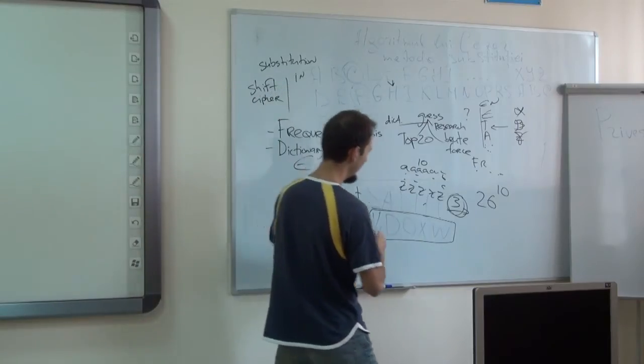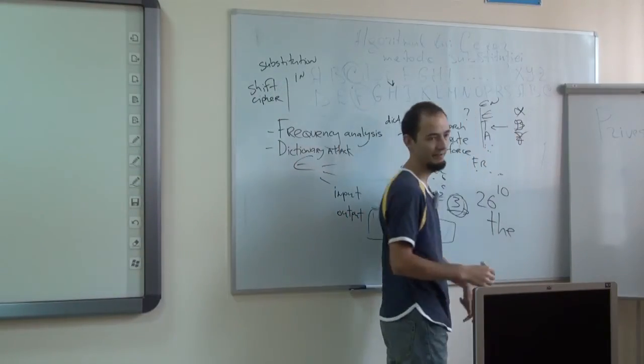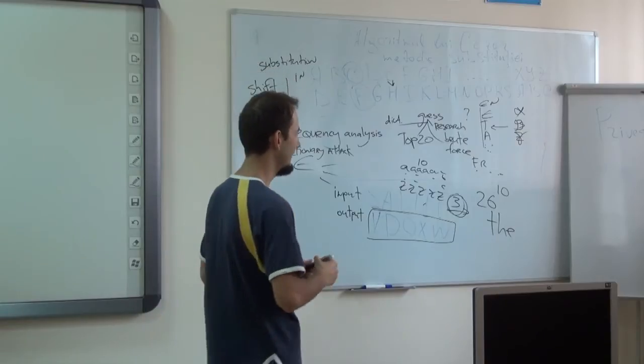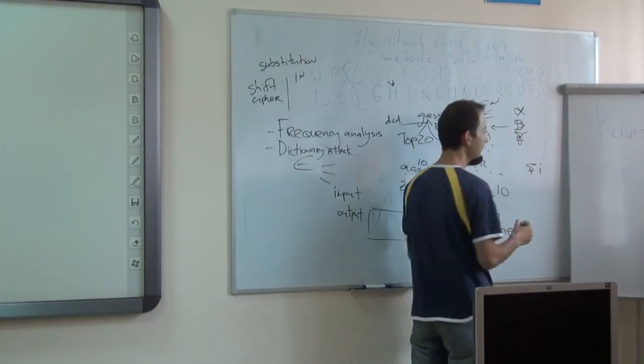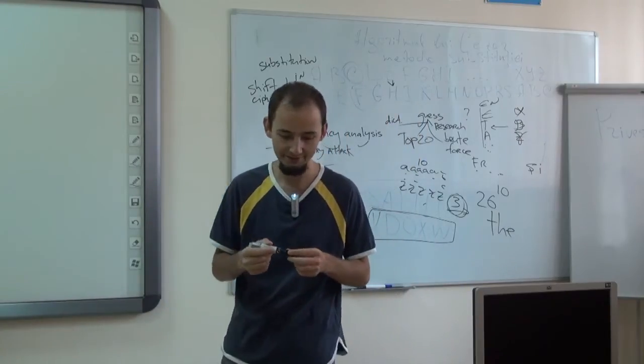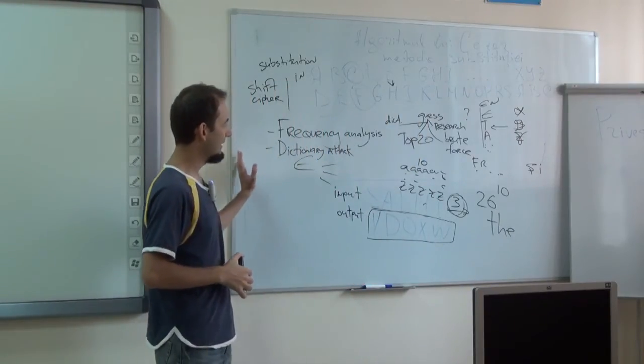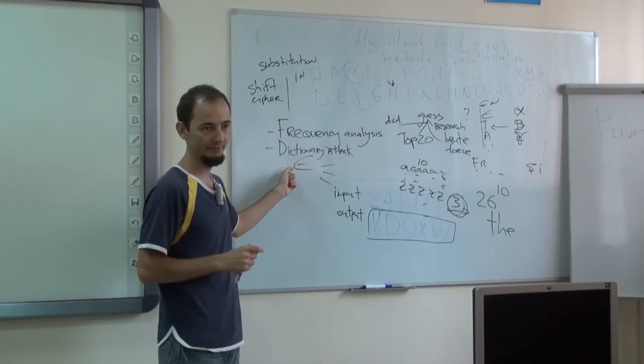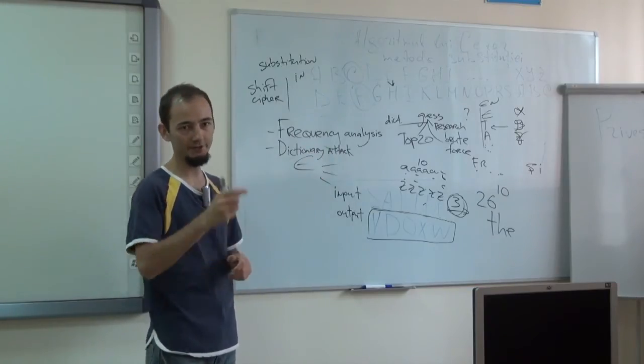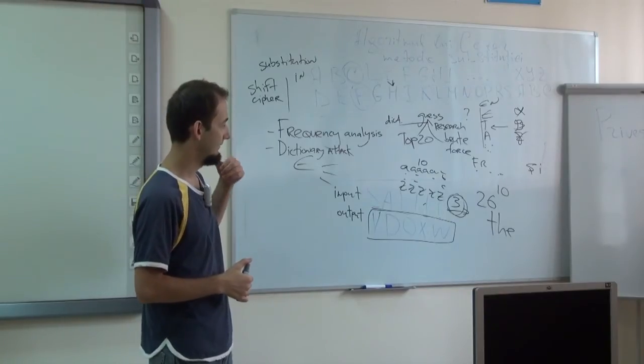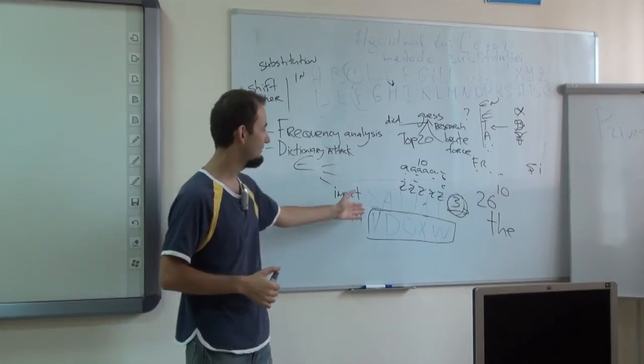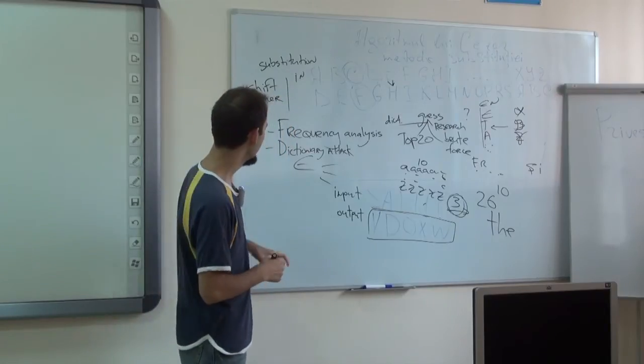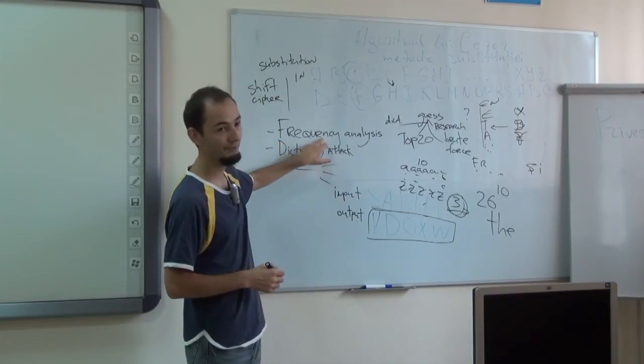For example, in English this would be maybe 'the'. In another language it could be some other thing. Let's say in Romanian perhaps it's 'she'. I don't know, but maybe it is. So you make a shift, you compare, you try to see if those words really are actual words. If they are, you can stop your algorithm and say this is the decrypted text. So basically that's it. So your mission is to mostly concentrate on this frequency analysis.